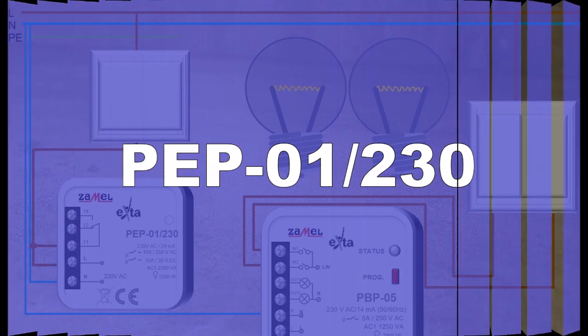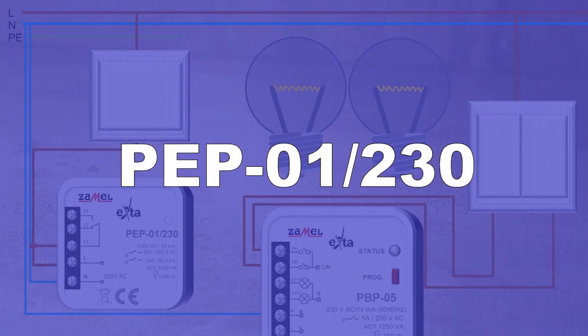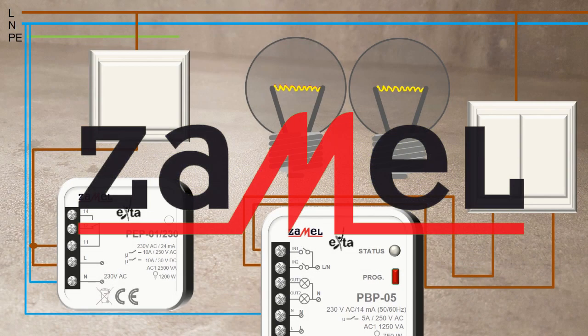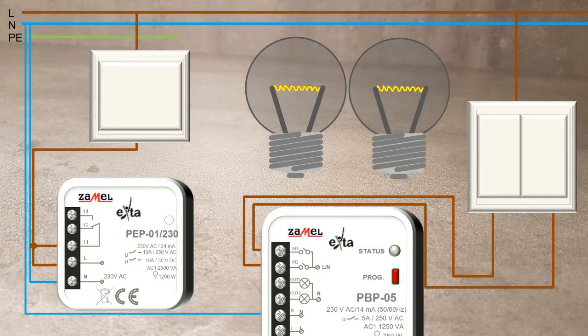To ensure interruption of the power supply to the PBP05 bistable relay by the PEP01230 electromagnetic relay, provide the phase potential to both terminal 11 of the PEP01 relay and the L terminal as well. After providing the phase signal, the PEP01 device will be activated. The relay will remove power from terminal 12 and provide it to terminal 14.